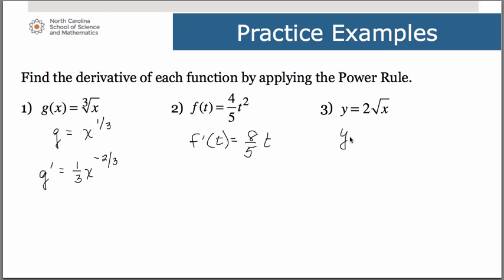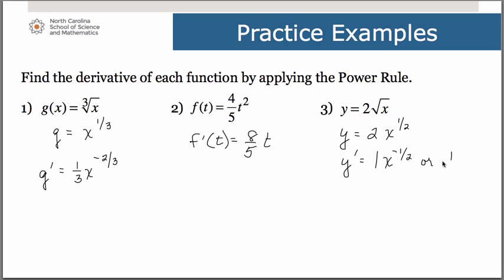Now the next one — we'll rewrite that also in exponential form: 2x to the 1 half. So our derivative: 2 times a half is just 1. You have x, take 1 away from the exponent, and that gives you a negative 1 half. You're free to leave it like that, or if you find it preferable, you can rewrite it in terms of a positive exponent. Either one is fine.